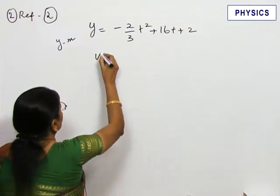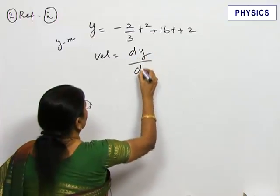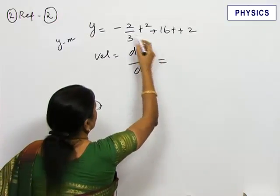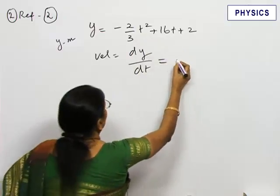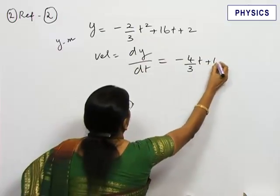This is displacement. Velocity of the particle is given by dy by dt. Differentiate the first equation with respect to t, you will get minus 4 by 3 t plus 16.